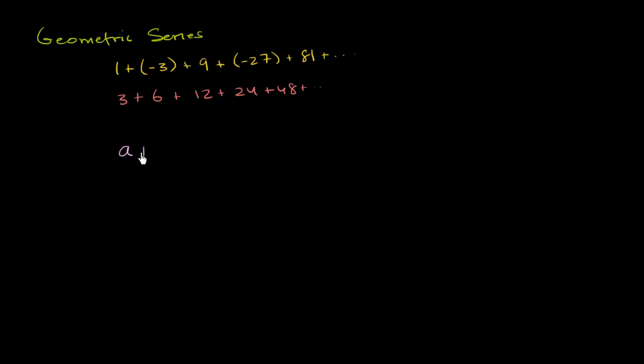And then each successive term that we're going to add is going to be a times our common ratio. And we'll call that common ratio r. So the second term is a times r. Then the third term, we're just going to multiply this one times r. So it's going to be a times r squared,